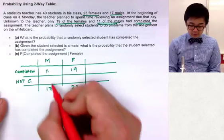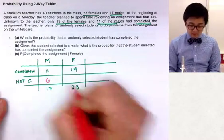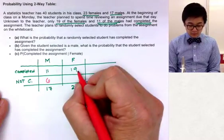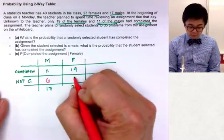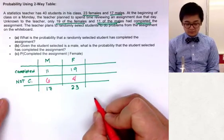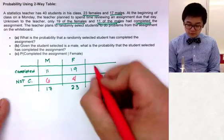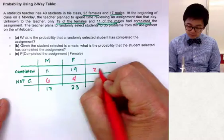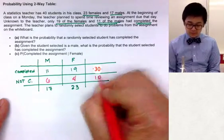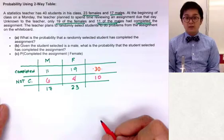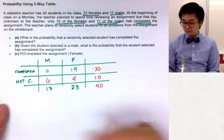There are 17 males, 11 of whom completed the assignment, so 6 did not complete it. 19 females completed it out of 23, so 4 did not complete it. A total of 30 students completed the assignment and 10 did not, giving us 40 students total in the two-way table.